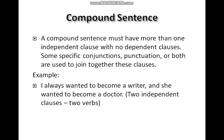A compound sentence must have more than one independent clause with no dependent clauses. Specific conjunctions or punctuation are used to join these clauses. For example: 'I always wanted to become a writer and she wanted to become a doctor.' Two independent clauses representing two different ideas are joined together and neither is dependent on the other.